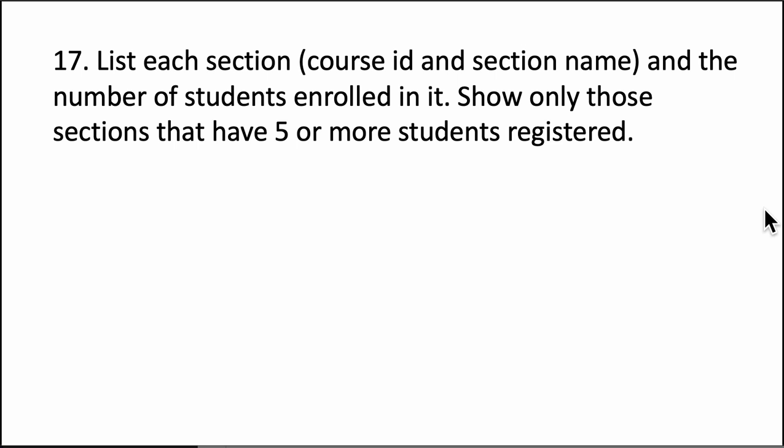But now we are saying don't list all the results — meaning don't list the number of students for every combination of course ID and section name. Instead, list only those sections that have at least five students registered in them.